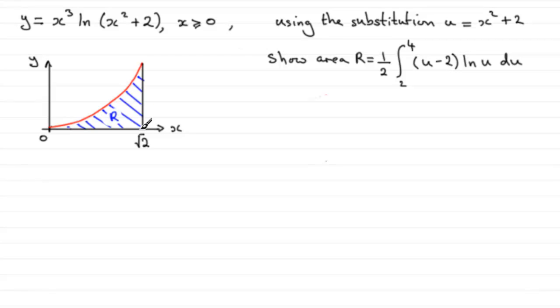And we've got to work out the actual area of R. We've got to show that that area of R is equal to half the integral from 2 to 4 of u minus 2, natural log of u, du, using this substitution u equals X squared plus 2.